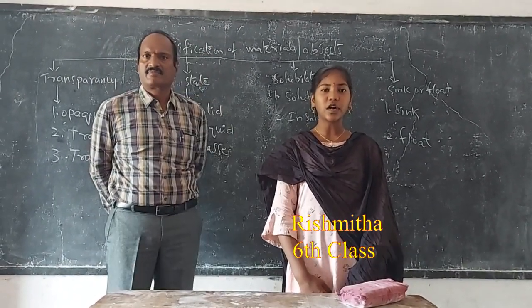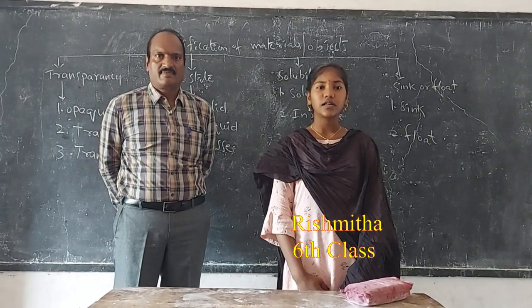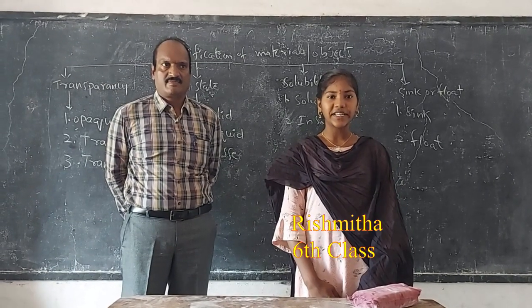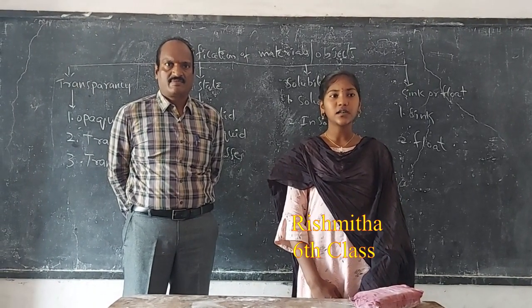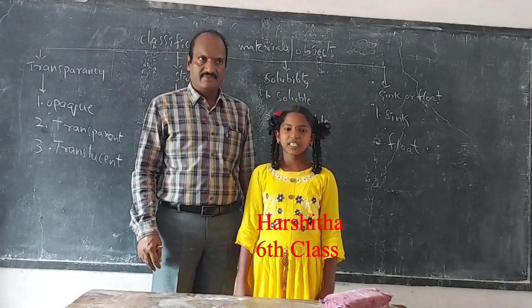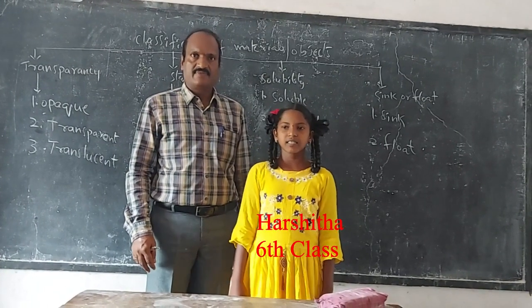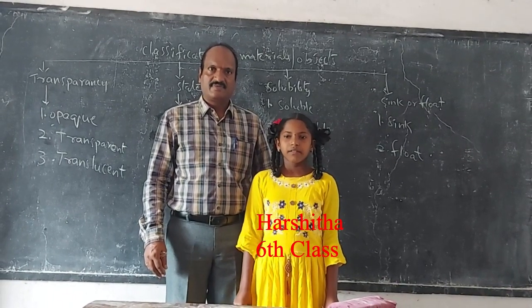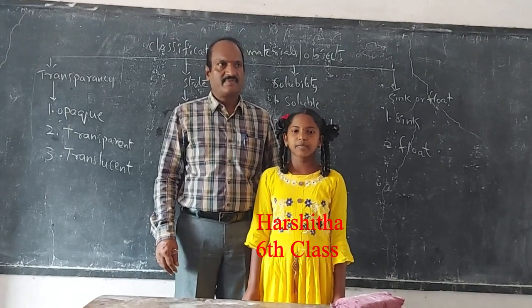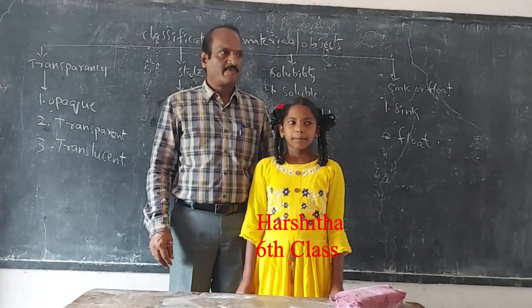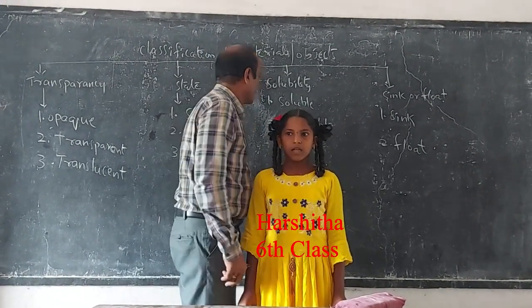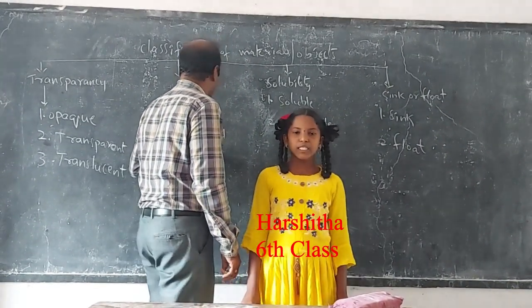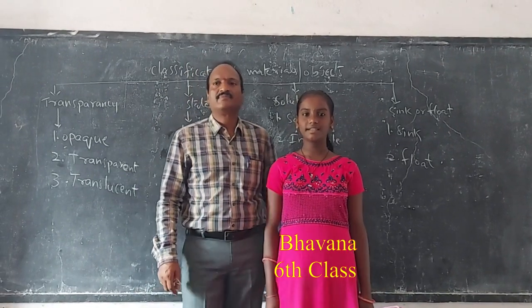State. Objects or materials are present in different states. On the basis of state, materials are classified into three types. Solids are the materials in which the atoms are closely packed. Example: table, chair.